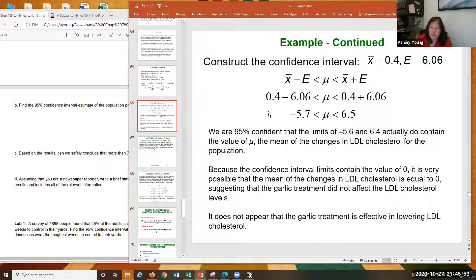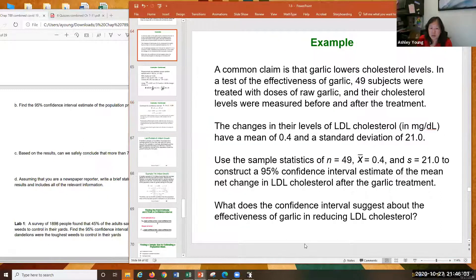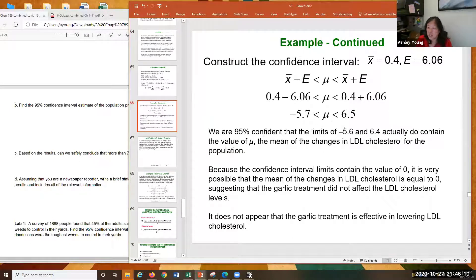Great. Okay, so that's your final answer. At the very bottom, they talk about what does it suggest about effectiveness in garlic? How effective is garlic? Not very, because it looks like it's kind of centered around 0. So it looks like 0 is totally kind of towards the middle of this. So it means that the interval limit contains 0. So it's very likely there's 0 change. In fact, it looks like it might even raise your cholesterol level possibly. But at any rate, it definitely does not look like it lowers it because 0 is a totally likely number. No change at all, 0 change.